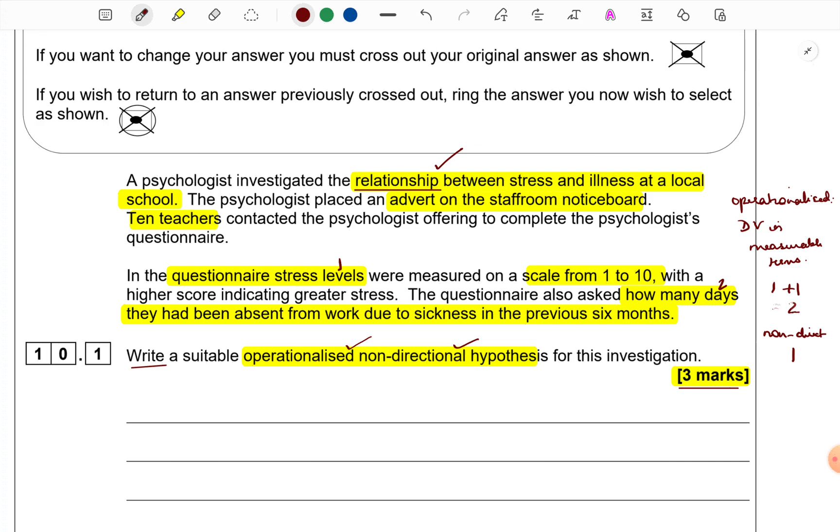This is a correlation question which we understand from the word relationship. Correlation questions are different from experimental questions especially when it comes to hypothesis. In an experimental hypothesis, we would speak about the difference between two groups. Here, we would speak about the relationship between two variables. So, first in our mind, we need to identify which are the co-variables in this scenario. One is stress level. And the other is days of absence.